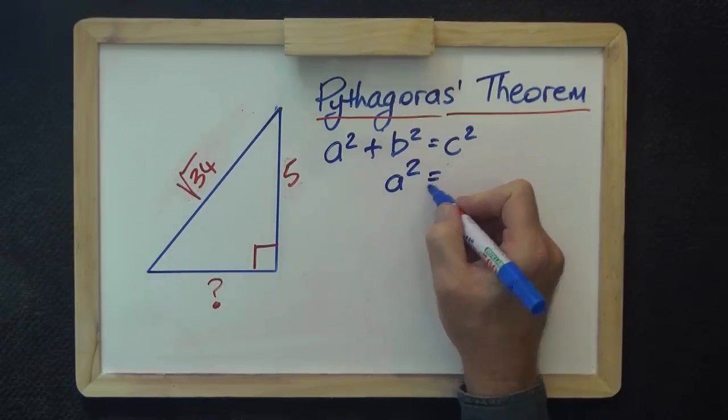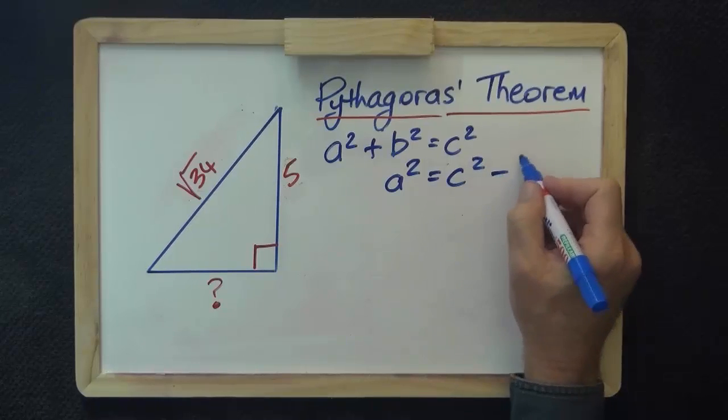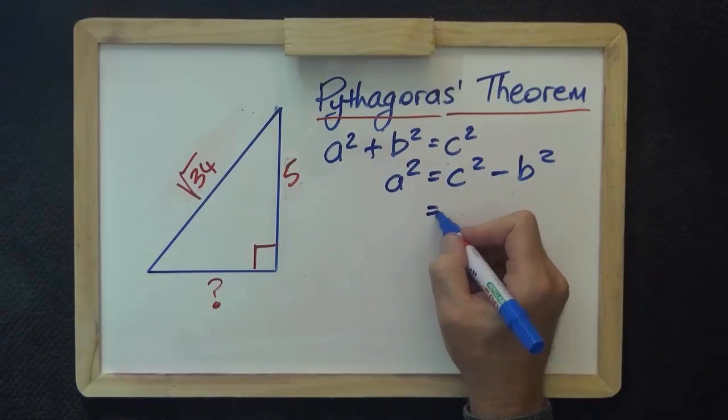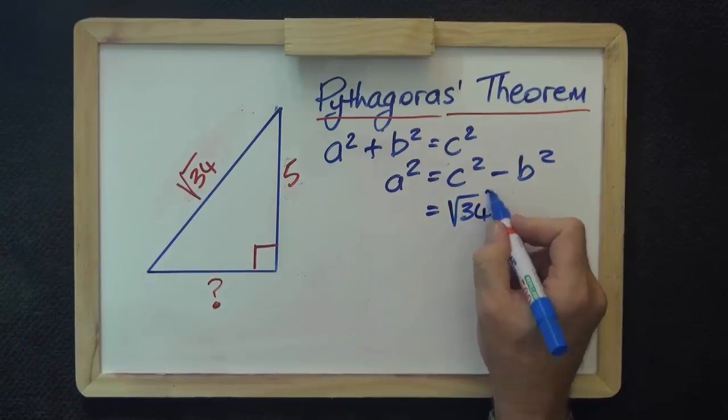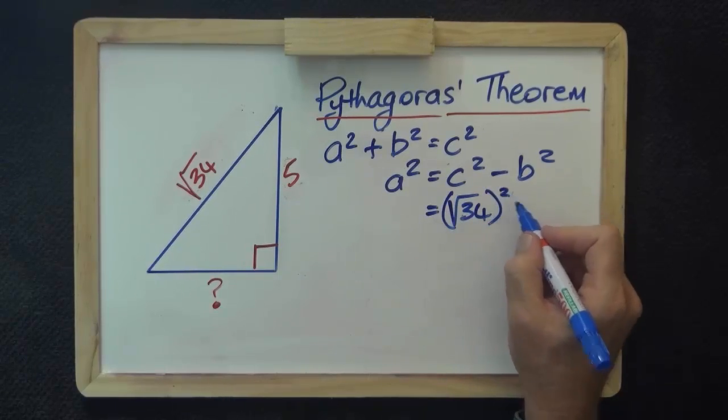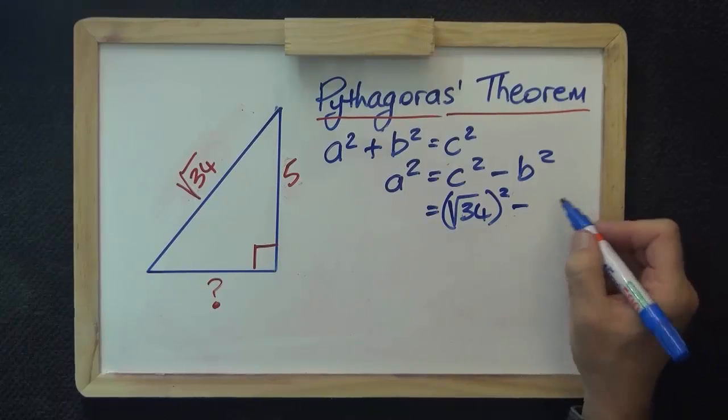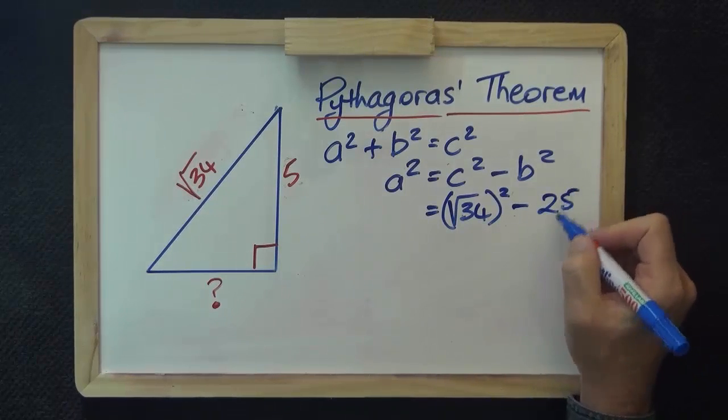Again, we can say a² = c² - b². Now, c squared is root 34 squared, and b is 25, 5 squared.